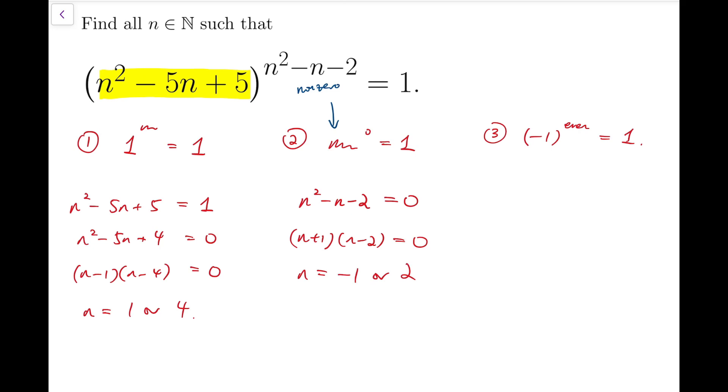Finally, for minus 1 to some even power, then that means we'll have to find n such that n squared minus 5n plus 5 equals minus 1. And that means n squared minus 5n plus 6 has to be 0. And then we can factorize. And eventually, n has to be 2 or 3.